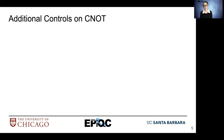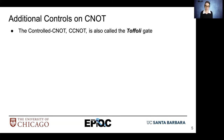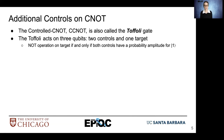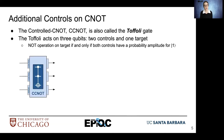What happens if we add additional controls to CNOT? That would be the controlled CNOT or CCNOT operation, which is also called the Toffoli gate. The Toffoli gate acts on three qubits — two controls and one target. The NOT gate operates on the target if and only if both controls have a probability amplitude for one, because our controls can be in a state of superposition and may not be 100% in the state of ket-1. Here we have our CCNOT or Toffoli gate symbol, which you'll often see in schematics or circuit diagrams for quantum circuits, with two controls and then a target — three total qubits.